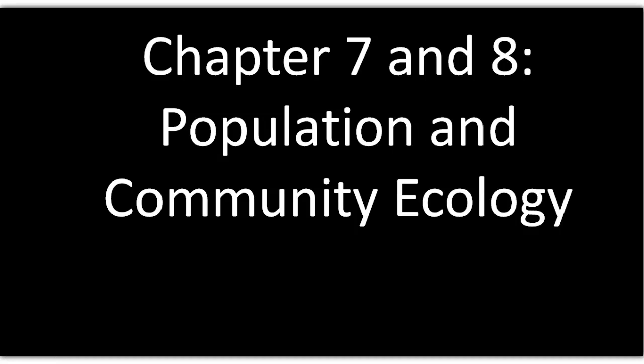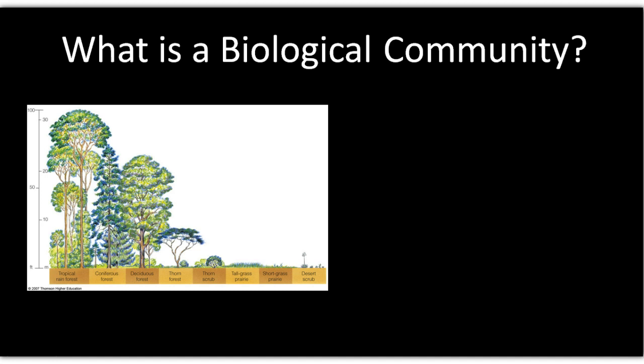This is the screencast for chapters seven, eight, and nine — population and community ecology, and also human population. So first thing to look at is a biological community.